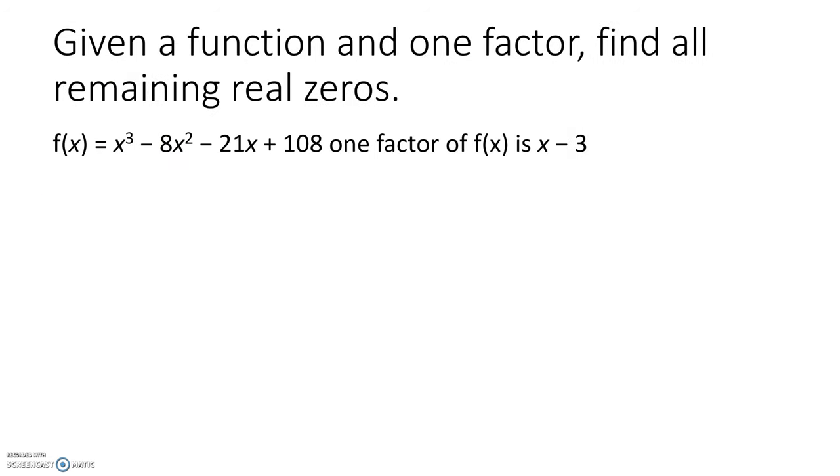Let's look at one more example. Given a function and one factor, find all remaining real zeros. Well again, this time we're given one of the factors, so we need to divide that factor out so that we can see what the other factors are. So I'm going to do synthetic division on this one. Either form of division will work – 1, -8, -21, 108.